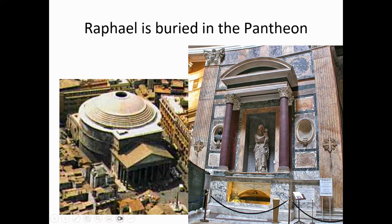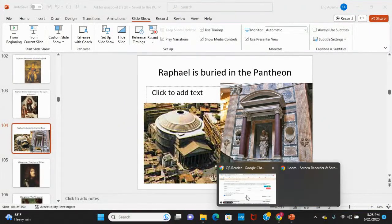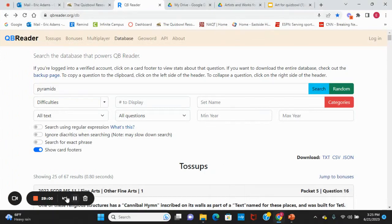Paris has its own Pantheon housing some of France's greatest citizens, whereas the Pantheon in Rome is for Italian citizens. That's it for our first installment. This was about 30 minutes, but usually the first one is going to be the longest. The next one will be much shorter, and you can always watch it at a sped-up speed.